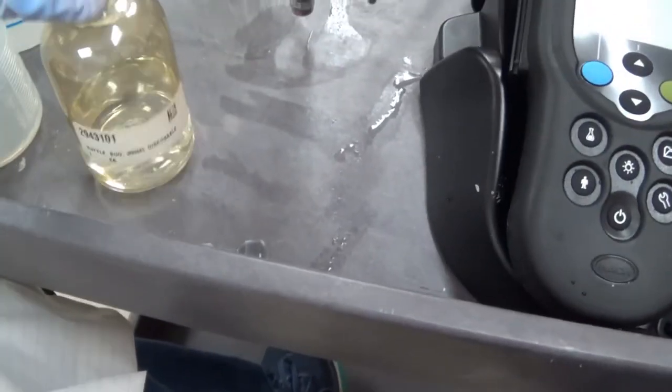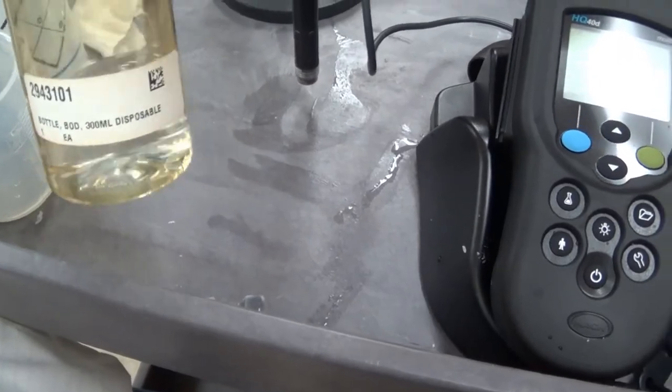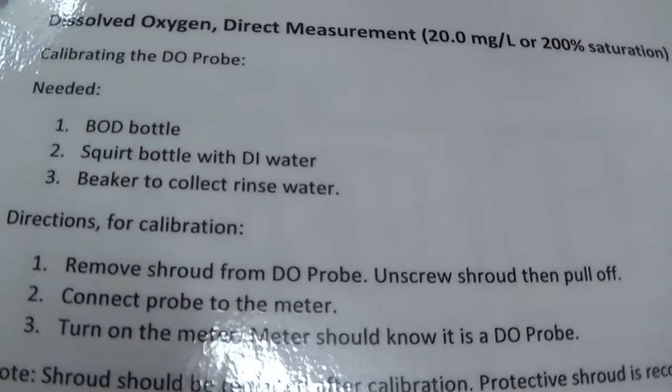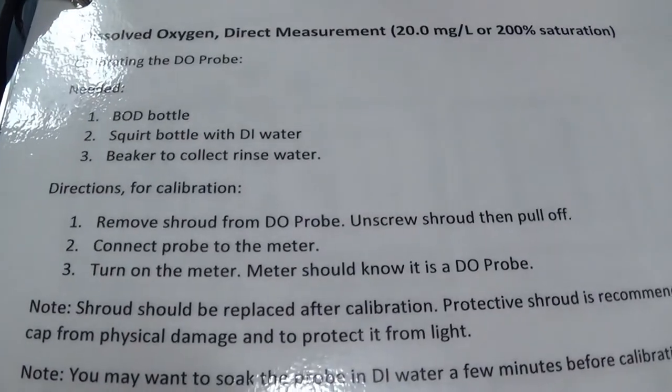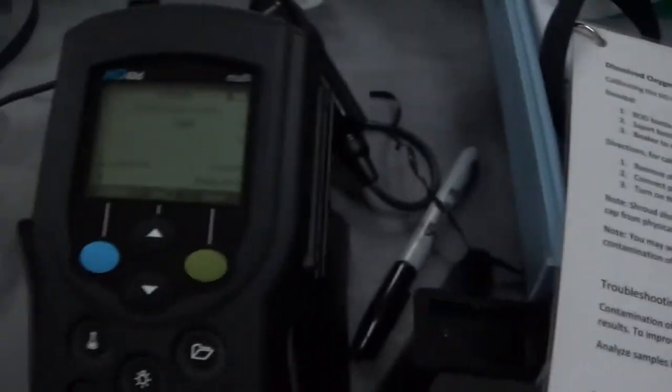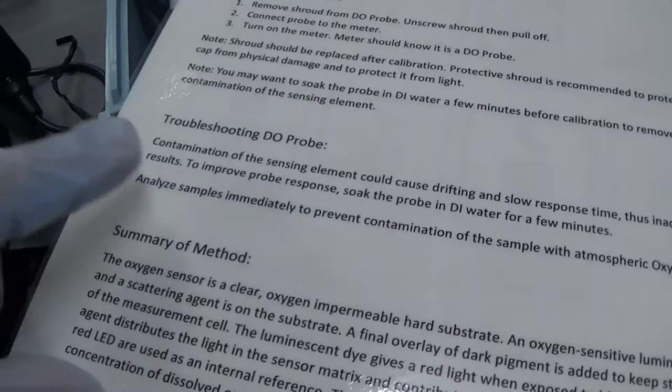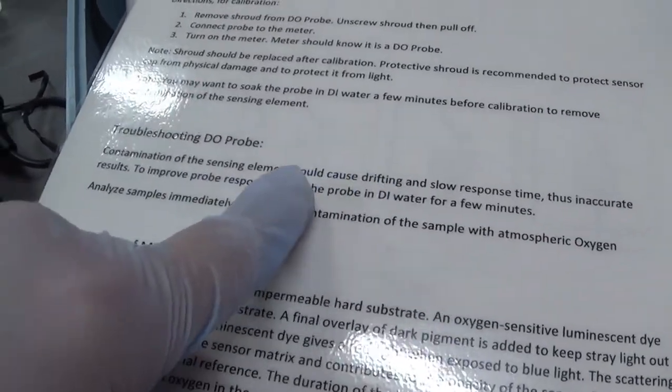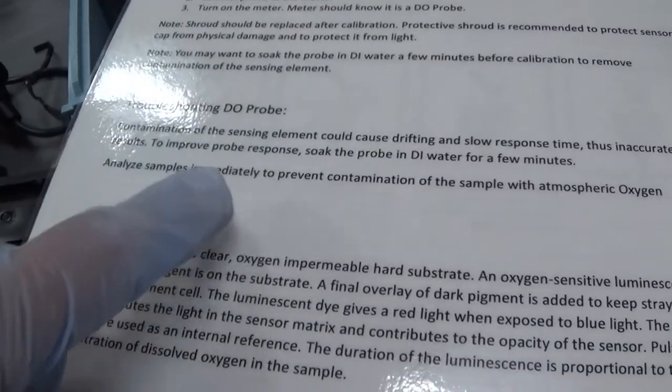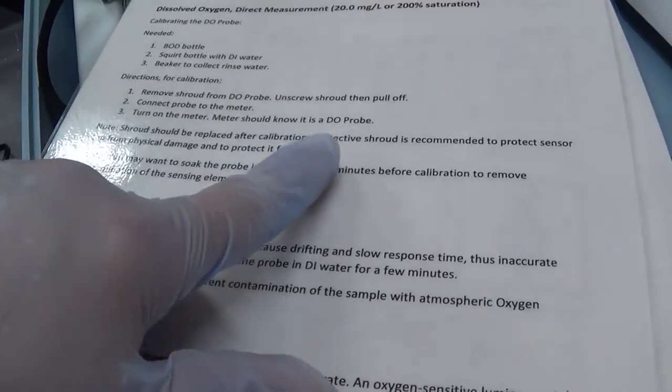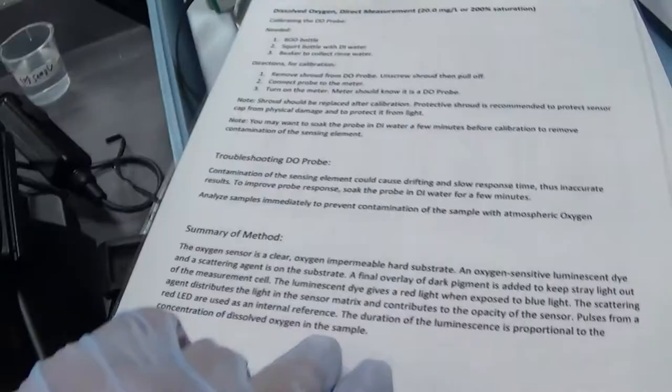We need a BOD bottle, which comes with our kit, and a cap that comes with our kit. This is what you need: your BOD bottle, the squirt bottle, beaker for rinse water. We may want to soak the probe to remove excess junk on it before use. It would cause drifting and slow response time. You should always have the protective probe cap when you are not using it, obviously.